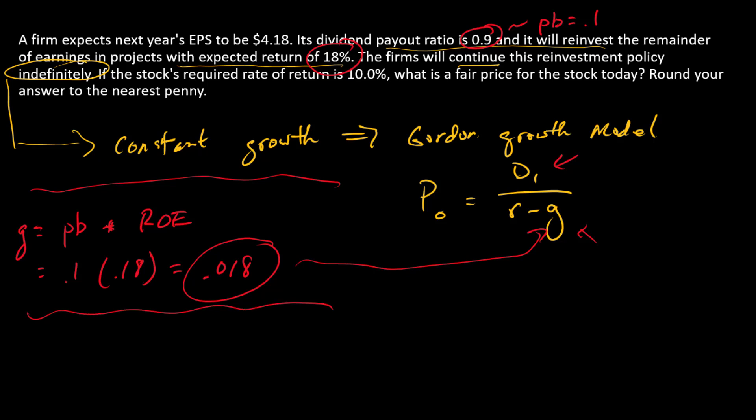Next, we need the dividend. So what's the dividend? The dividend is the payout ratio times earnings per share. So 0.9. So there's the 0.9. And multiply that by earnings per share of 4.18. That's 3.762. Okay, so that then is going to go in here.